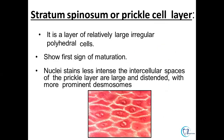Stratum spinosum comprises large irregular polyhedral cells and is the first sign of maturation — the basal layer has differentiated into the prickle cell layer. In these layers, the nuclear staining will be less intense compared to the basal layer, which is hyperchromatic due to increased mitotic activity. These large cells have less nuclear intensity, large intercellular spaces, and prominent desmosomal junctions.